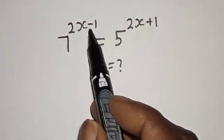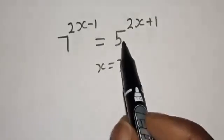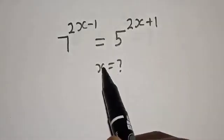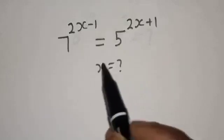7 raised to power 2s minus 1 is equal to 5 raised to power 2s plus 1. What is the value of s?